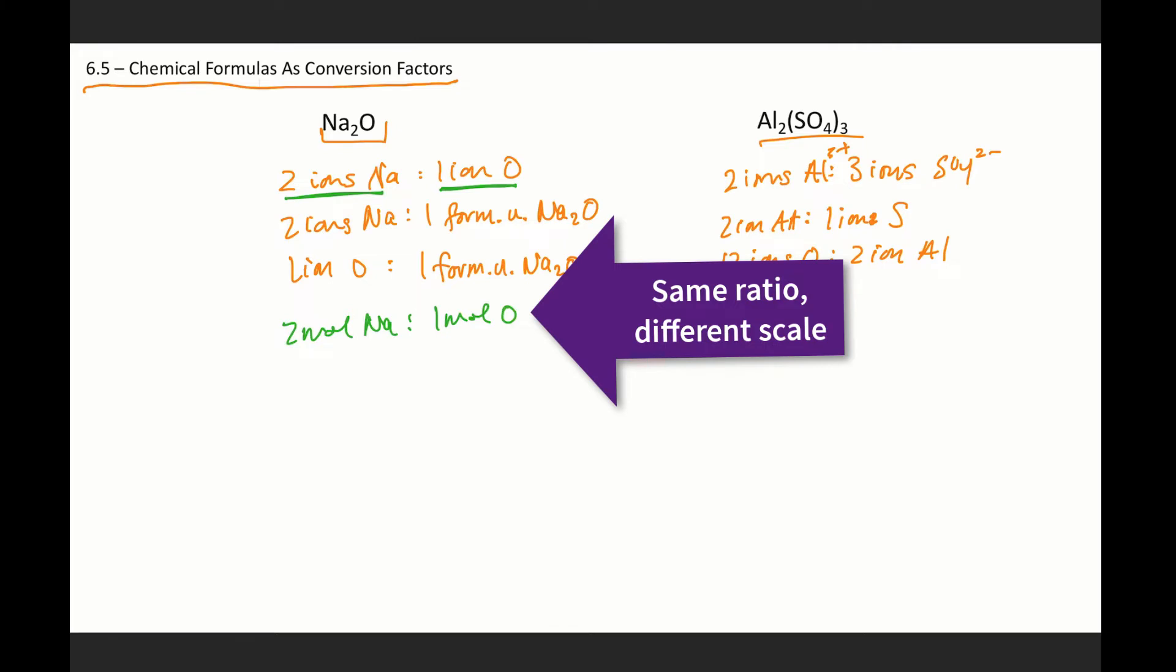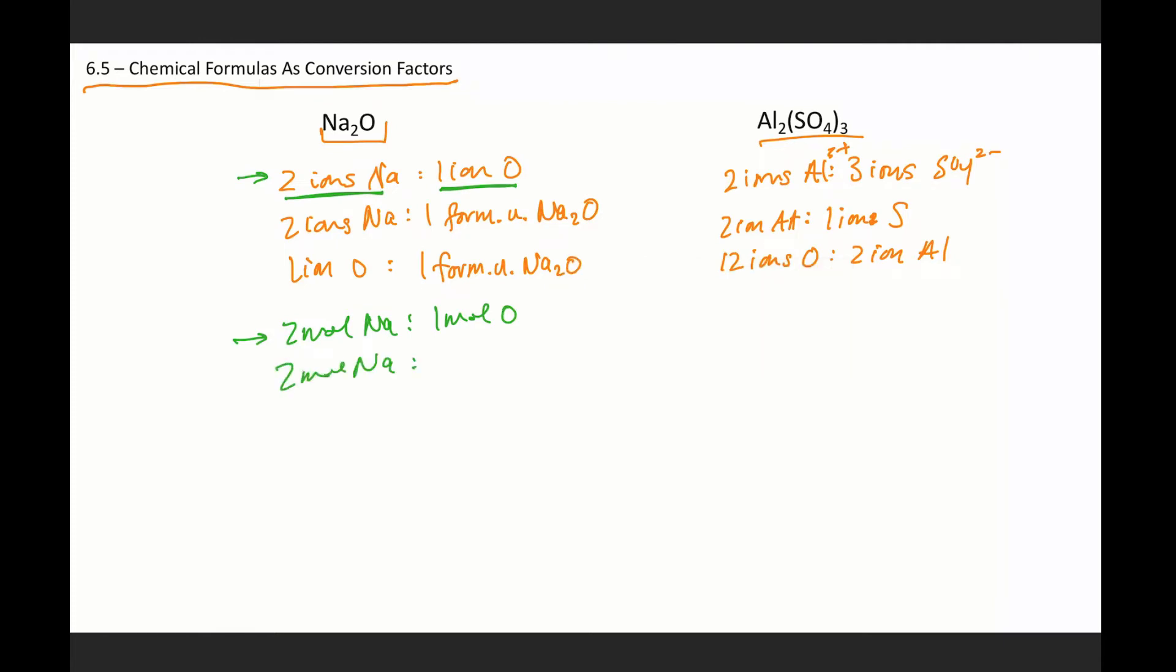This is talking about the individual particle. This is talking about on the scale of moles. So I could also say two moles of sodium for every one mole of that. Likewise, over here, I could say two moles of aluminum for every three moles of sulfate. And so forth and so on. What this gives us is a way to describe the relationships embedded in a chemical formula either at the singular particle level or at the larger mole level where moles are just a scaled up number of particles.